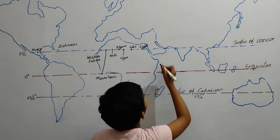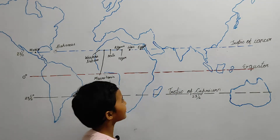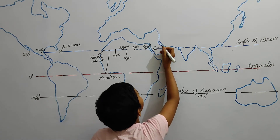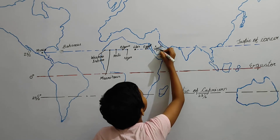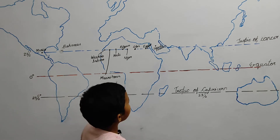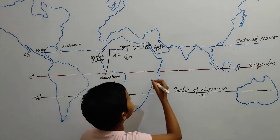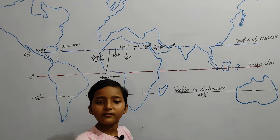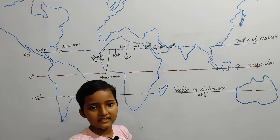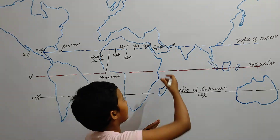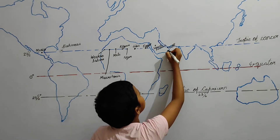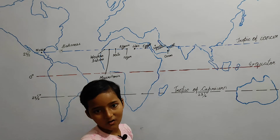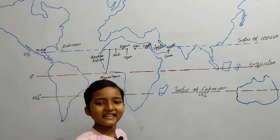The first country in Asia on the Tropic of Cancer is Saudi Arabia. Now there is a very small country that is UAE — the full form of UAE is United Arab Emirates. And there is one more country that is Oman.